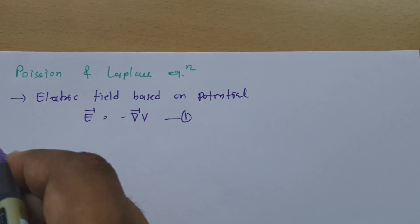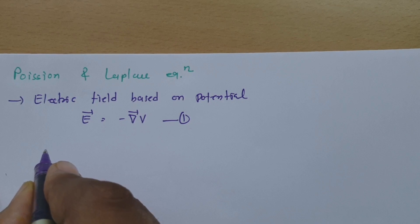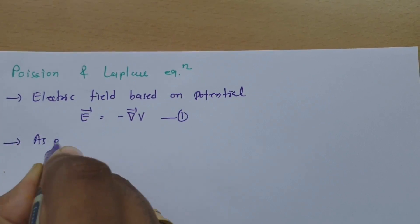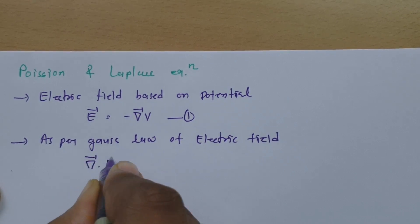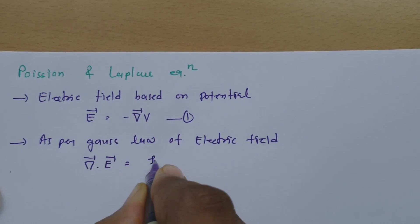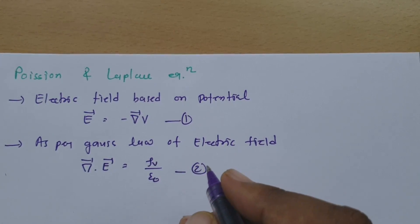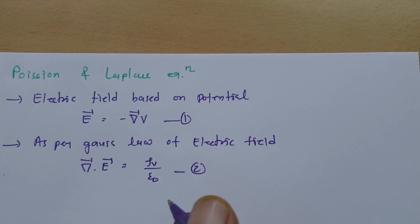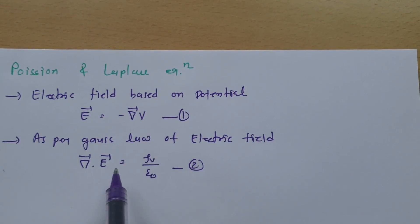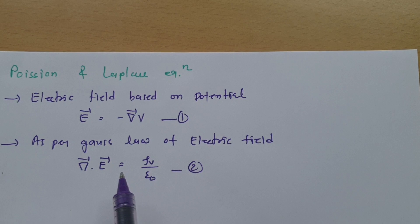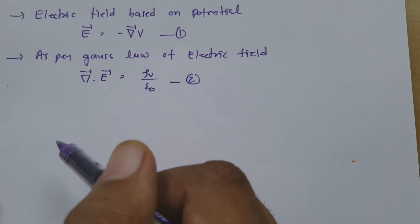As per Gauss law for electric field, del dot E equals rho V divided by epsilon 0. This is equation 2. Now, if I apply this electric field expression into that formula, we can derive Poisson's equation.